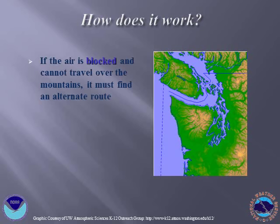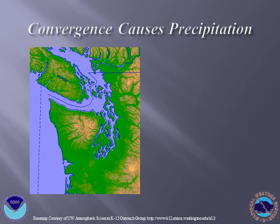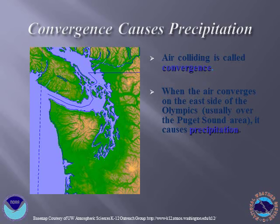When the air cannot easily travel over the mountains, it must find another way to continue on its path towards the east. Usually, the easiest way for the air to do this is to go around the mountains on both sides, as you can see on this image. When the air meets on the other side of the mountains, it is called convergence because the air is colliding. This convergence causes precipitation, which is a term for the various forms of water that fall from the clouds, such as rain or snow.